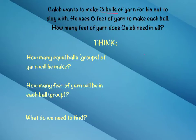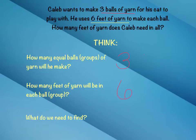Caleb wants to make three balls of yarn. So he wants to make three groups or three balls of yarn. How many feet of yarn will be in each group? This says that he needs six feet of yarn in each group. So let's write the six here. He wants three equal groups or balls, and he wants six feet of yarn in each group. So what is the question asking us to find? How many feet of yarn does Caleb need in all?